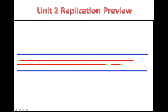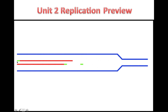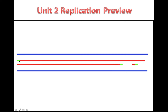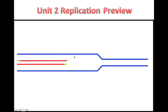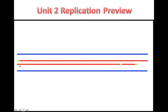Notice that the top newly synthesized strand here is synthesized continuously starting from an RNA primer. DNA polymerase will bind here and extend this continuously in a 5 prime to 3 prime direction as the DNA replication fork progresses down the DNA molecule.